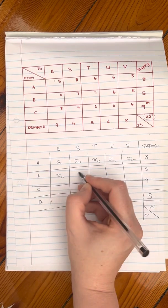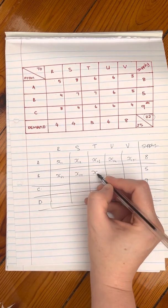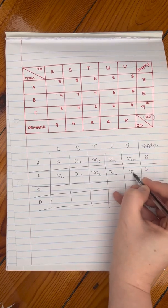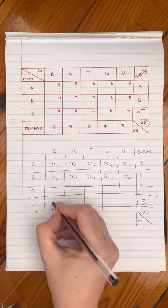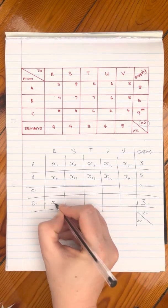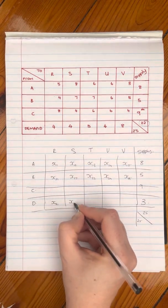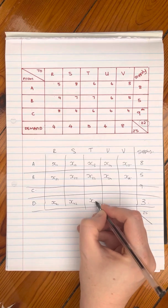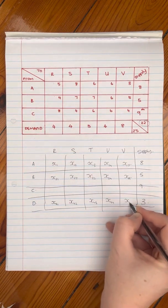And x21, x22, x23, x24, x25. What you're doing here is you're actually bringing in five more variables. You're bringing in x41, you're bringing in x42, x43, x44, and x45.